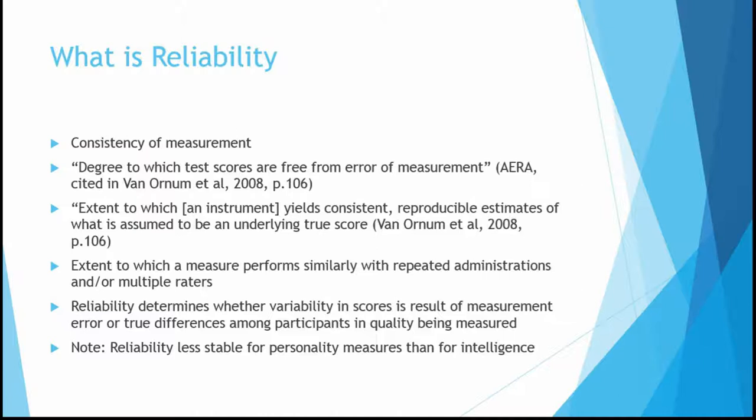Another way to think about reliability is that it determines whether variability in scores is a result of measurement error or true differences among participants. In research, you want to see difference in scores — for example in a depression study, you don't want everyone to show the same level of depressive symptomatology because that means your independent variables had no effect. Reliability helps us know whether the variability we see is because of true differences among people or because error is making everyone's scores look a little different.